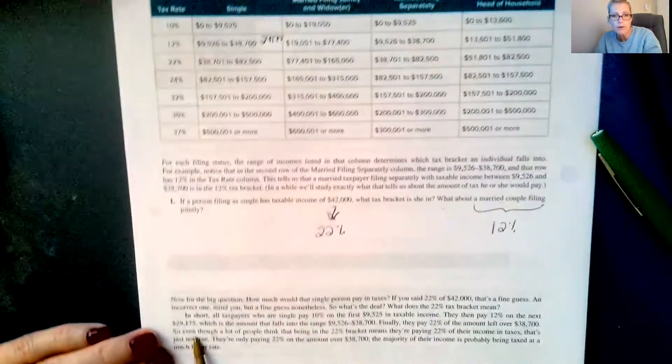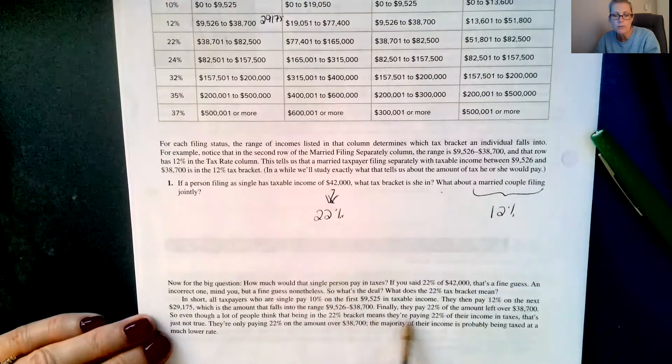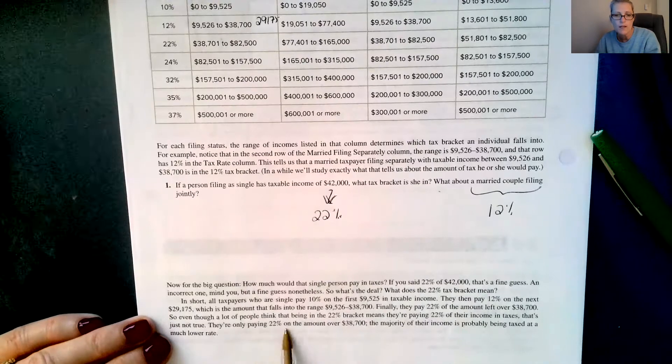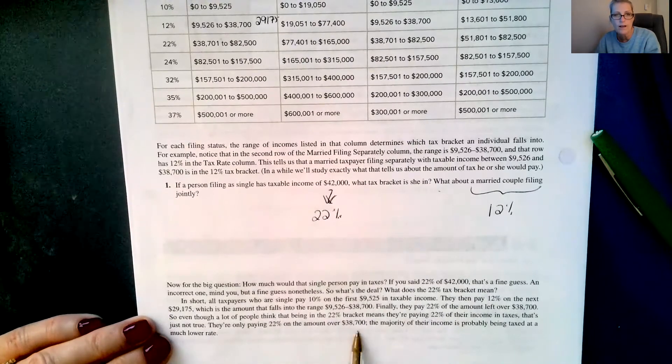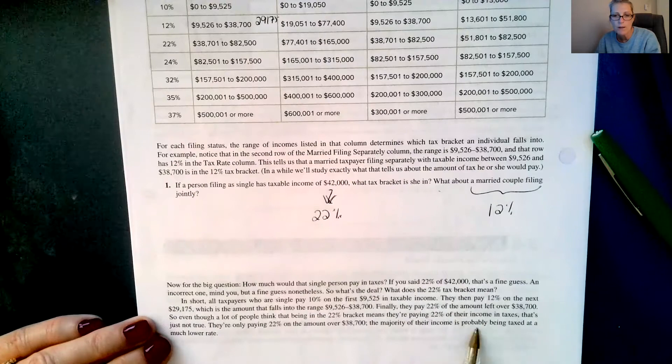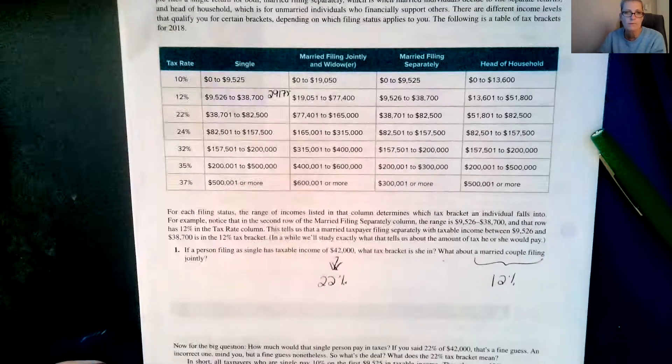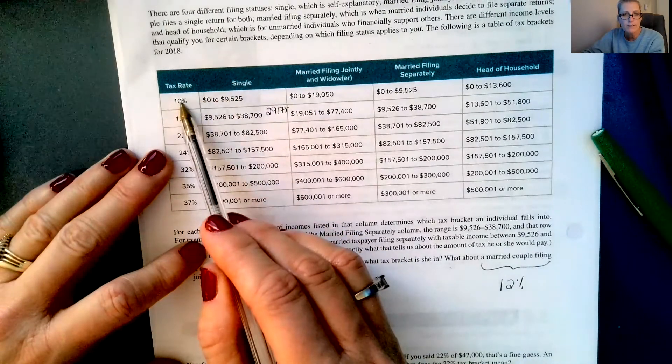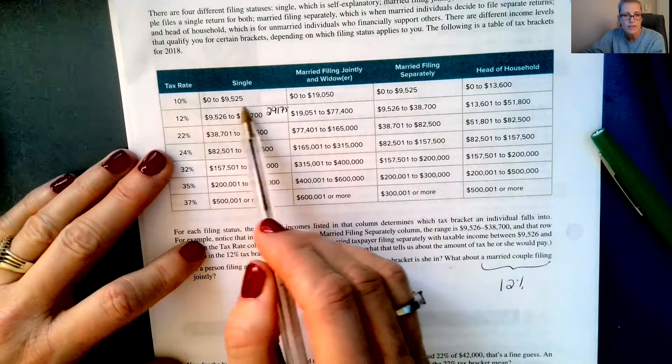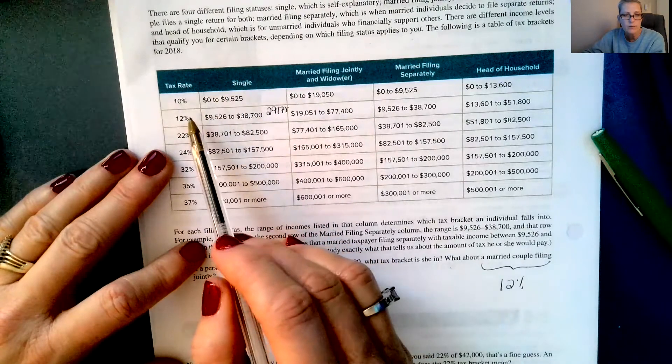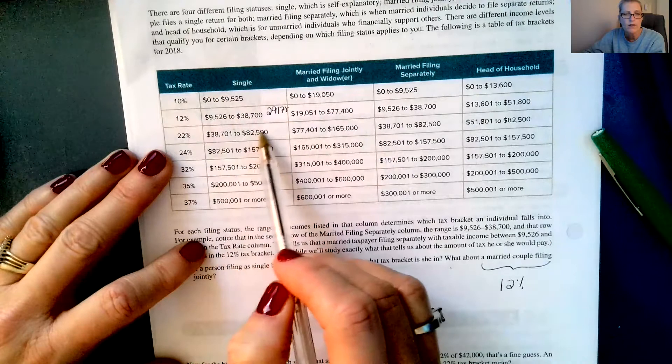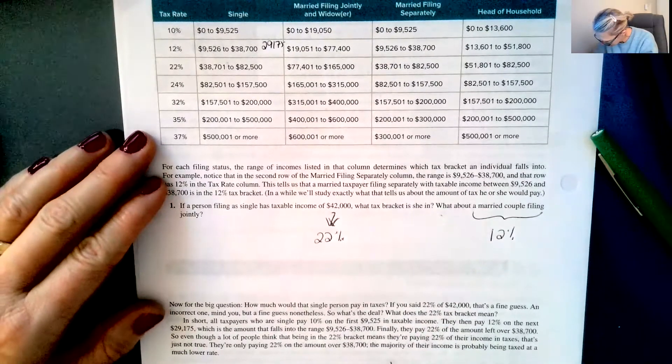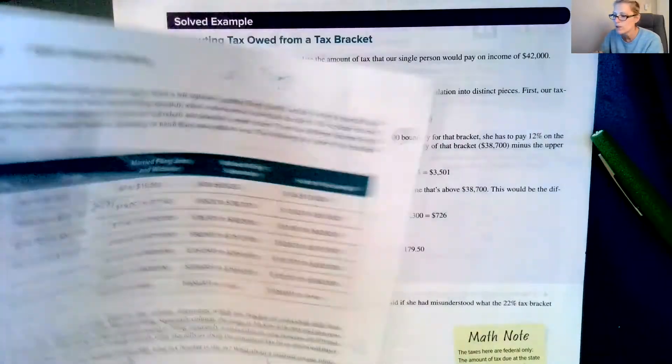So even though a lot of people think that being in the 22% bracket means they're paying 22% of their income in taxes, that's just not true. They're only paying 22% on the amount over $38,700. The majority of their income is probably being taxed at a much lower rate. This first chunk of your money is being taxed at 10%. The next chunk of your money, if it falls in here, is going to be taxed at 12%. And then the next chunk of your money that falls into here is going to be taxed at 22%.